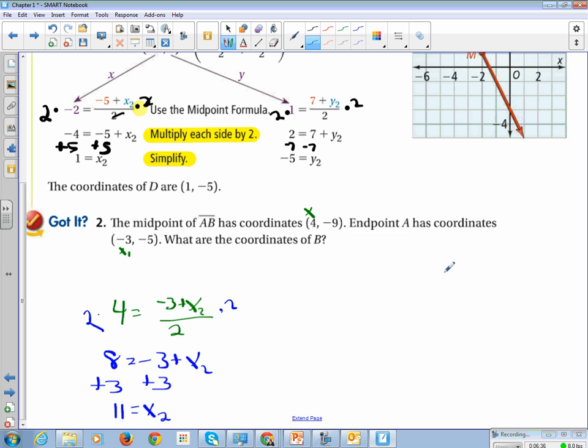And then the y-value is, so we're going to multiply both sides by 2, and then add 5 to both sides to get negative 5 equals our y-value. Then put it all together for our answer. Coordinates of B are 11, comma, negative 5.